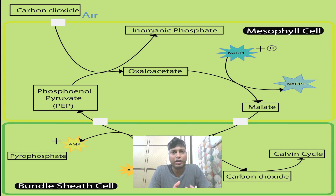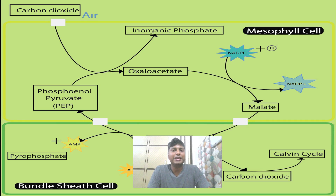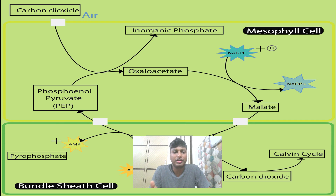In the first part of the C4 pathway, the first compound is phosphoenolpyruvate (PEP). Here the first carbon dioxide acceptor is phosphoenolpyruvate, whereas in C3 plants the first carbon dioxide acceptor is RuBP — ribulose bisphosphate, a 5-carbon sugar. In the first step, carbon dioxide is added to PEP and a 4-carbon compound, oxaloacetate, is formed — with one phosphate being lost. The first stable compound in C4 plants is oxaloacetate, which is why this is known as the C4 pathway.